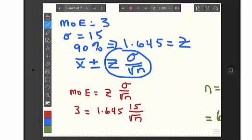It is the margin of error, and we'll set it equal to that. So, we'll just plug now. Three is for the margin of error is equal to 1.645 times standard deviation of 15 divided by the square root of n.